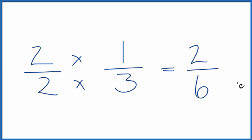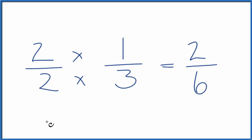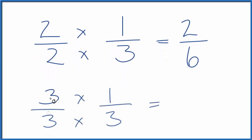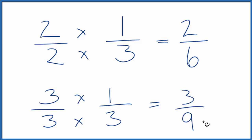Let's do another one. How about three over three? Three over three is still one. So three times one is three, and three times three is nine. Three-ninths is another equivalent fraction for one-third.